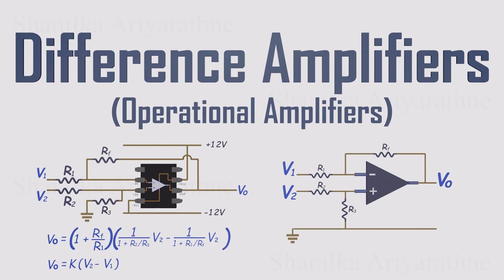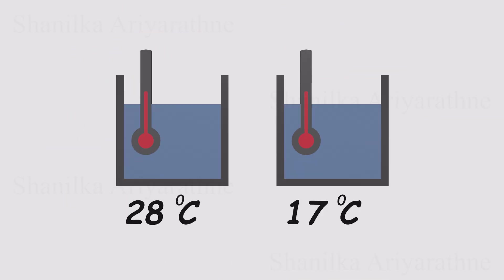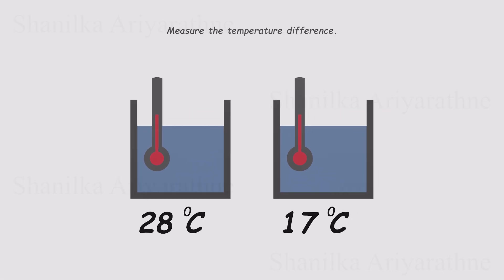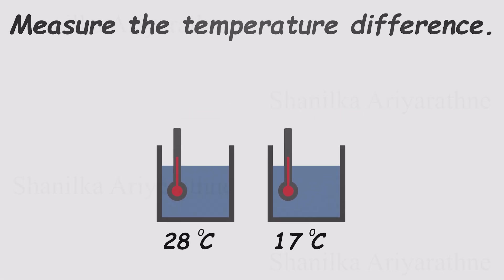Let's kick things off with a simple example. Picture two containers of water, each at a different temperature. Now, say you want to measure the temperature difference automatically, in real time. How would you pull that off?